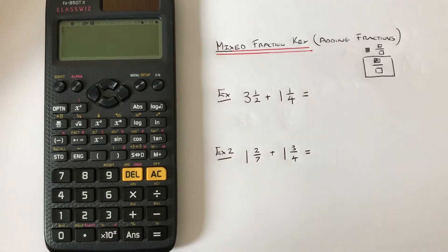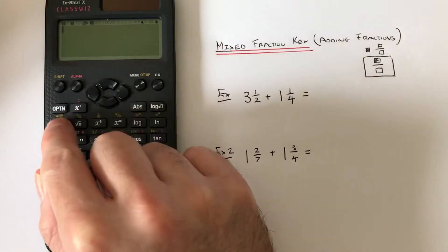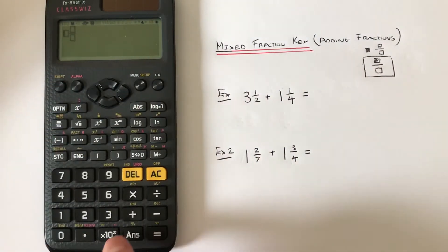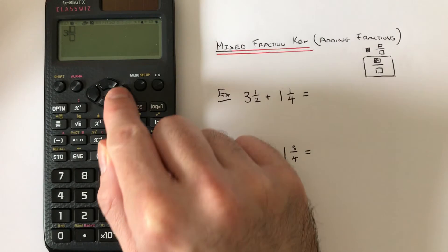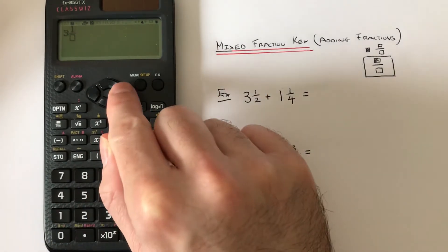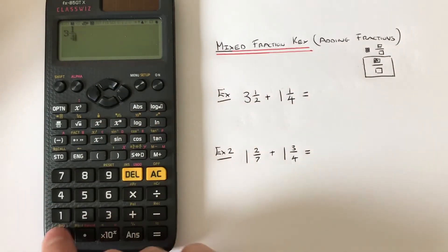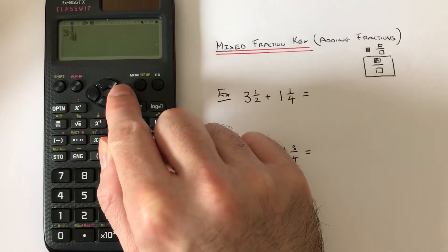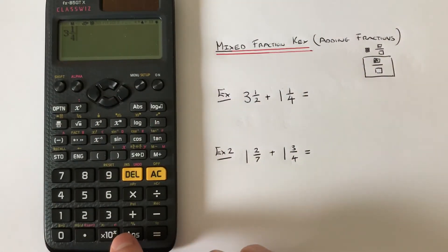We've got 3½ + 1¼. Press shift, mixed fraction, then press 3, right key, 1, right key, 4, right key again, then plus. For one and a quarter, press shift, mixed fraction, then 1, right key, 3, right key, 4.